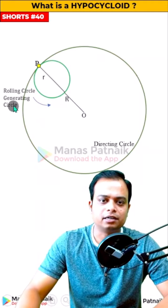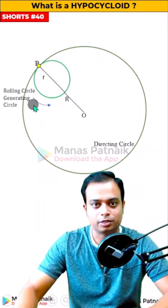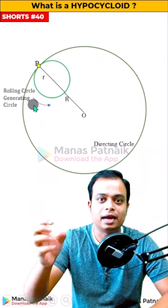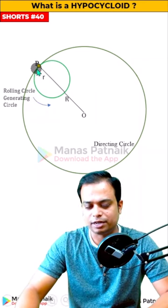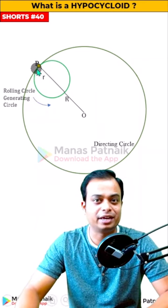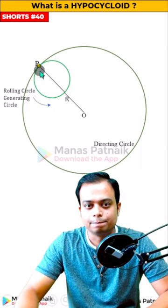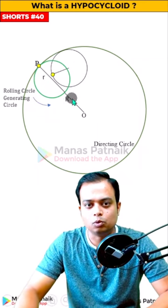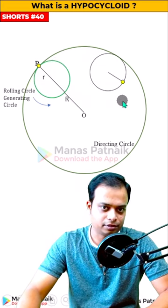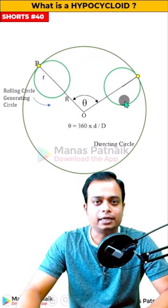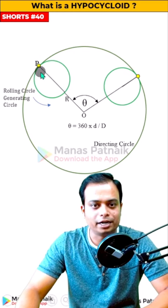In this arrangement we've got a directing circle and a rolling circle, but it is inside. It is going to roll in an anti-clockwise direction. Just focus on this very point P — where does it go? We need to keep track of it: one, two, three, four, five, six, seven, eight — at all eight steps.